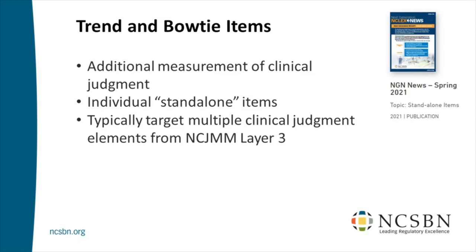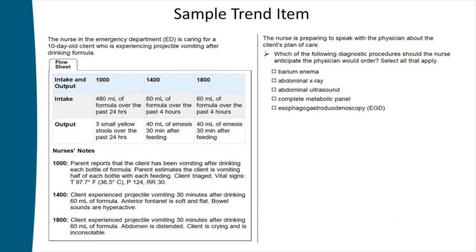The second standalone item type is the bow tie. We see a couple of tabs similar to an exhibit item, but on the right-hand side is something new — we call it a bow tie item because the answer area is shaped like a bow tie. It's a drag-and-drop with special structure: in the middle of the bow tie where the knot would be is 'condition most likely experiencing.' On the left is 'actions to take.' On the right is 'parameters to monitor.' Each section only accepts answers from its designated list.